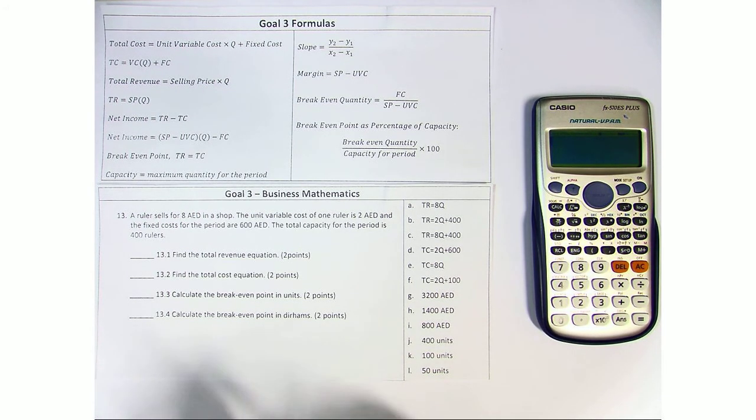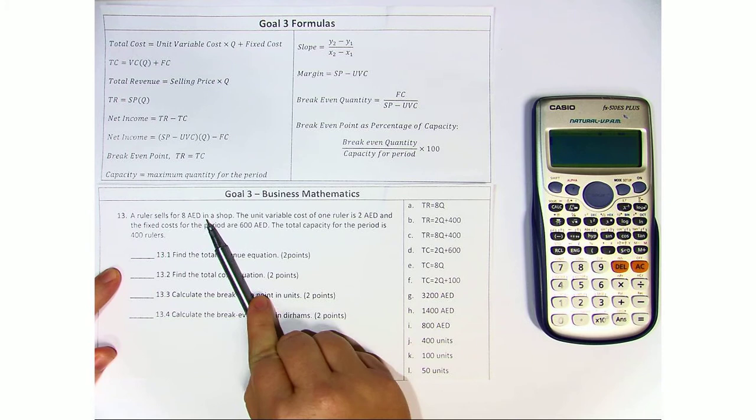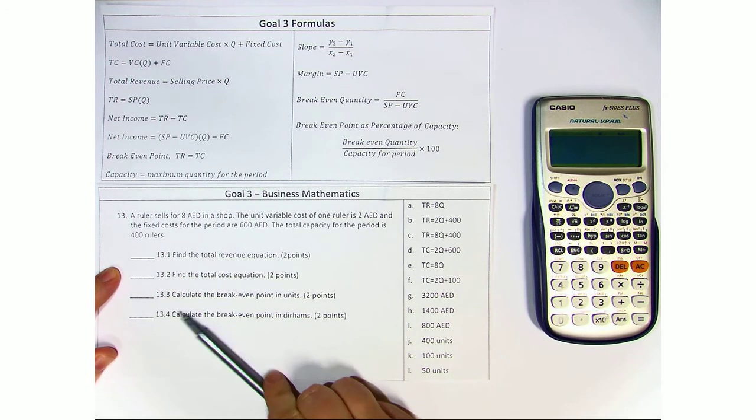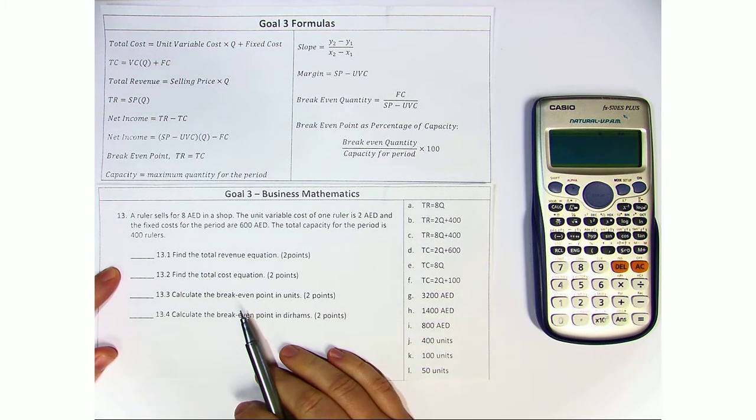Looking at 13, we're going to start by reading through the question and then identifying the key parts. A ruler sells for 8 dirhams in a shop. The unit variable cost of one ruler is 2 dirhams, and the fixed cost for the period is 600 dirhams. The total capacity for the period is 400 rulers.